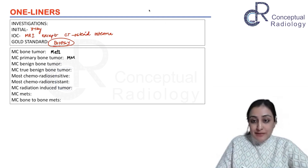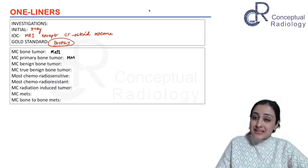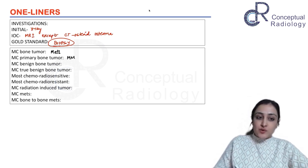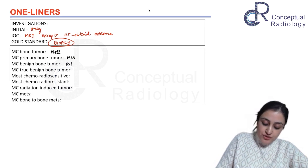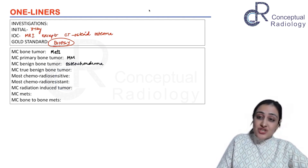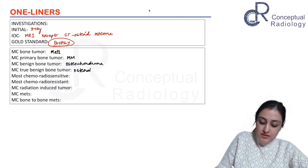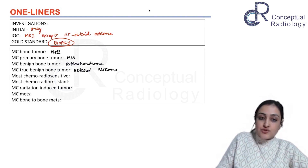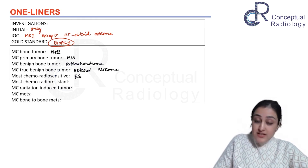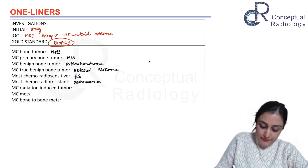The most common benign tumor is osteochondroma, but it is considered a congenital accident rather than a true benign bone tumor. If a true benign bone tumor is to be considered, it is osteoid osteoma which is more common.